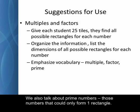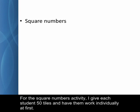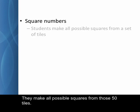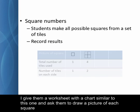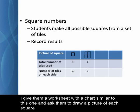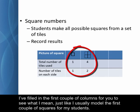We also talk about prime numbers, those numbers that could only form one rectangle. For the square number activity, I give each student 50 tiles and have them work individually at first. They make all possible squares from those 50 tiles. I give them a worksheet with a chart similar to this one and ask them to draw a picture of each square and record the total number of counters and the number of counters on each side.